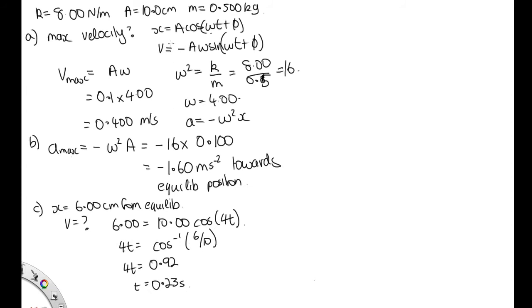Then we can just substitute this into the velocity equation. So the velocity is equal to minus A omega, so minus 0.100 times omega, which is 4, sine of omega, which is 4 times 0.23 the time. Solving that, we end up with minus 0.32 meters per second.